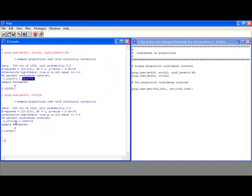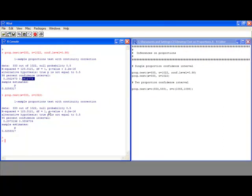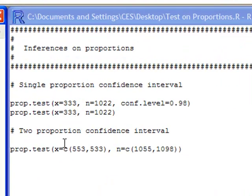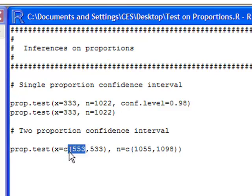Suppose we want to do two proportions, or we have two proportions and two groups that we'd like to know if the proportions are different between the two groups. What we're going to use is the prop.test, except we're going to modify it by adding this additional statement that has C, which means a column. Here we're going to put in the first entry, 553, which shows the number of successes in our first population sample. This is the number of successes in our second sample that corresponds to our second population.